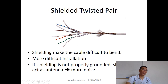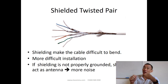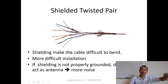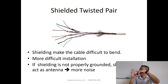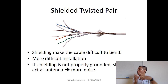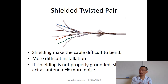Once you have shielding, the cable becomes more difficult to bend, so installation is slightly harder. Also, the shielding must be properly grounded — it must touch a metal plate on your patch panel so it's grounded to earth. If it's left open, it will act like an antenna and you'll get even more noise. That's the difference between shielded and unshielded.